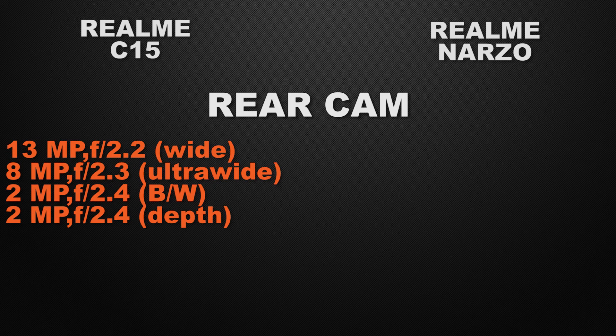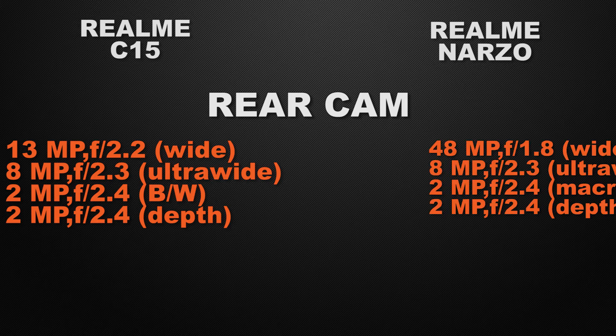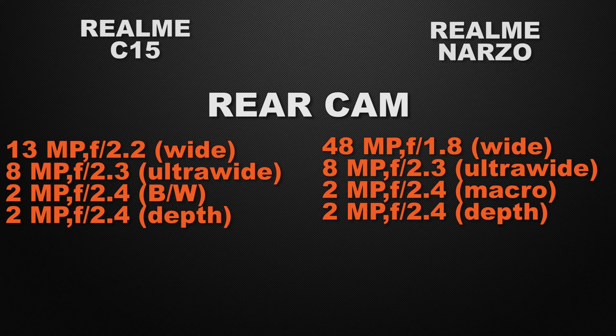Let's start with the main feature of the devices — camera. Starting with the rear camera: Realme C15 has a quad camera setup with 13MP wide, 8MP ultra-wide, 2MP black and white, and 2MP depth sensor. Narzo 10 also has a quad camera setup with 48MP wide, 8MP ultra-wide, 2MP macro, and 2MP depth sensor. The winner here is Realme Narzo because of the 48MP wide camera sensor.